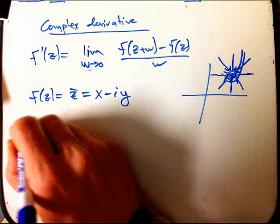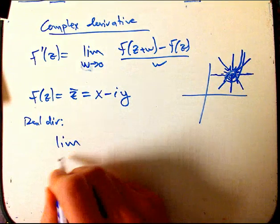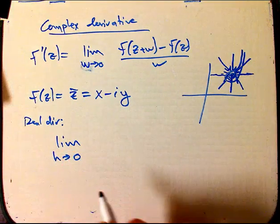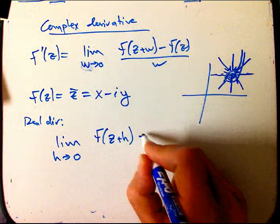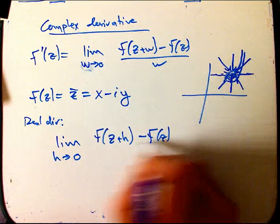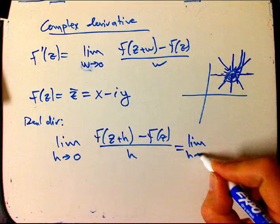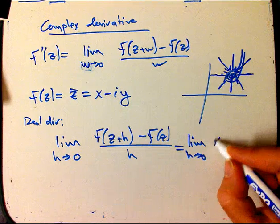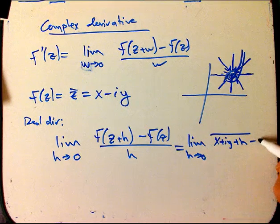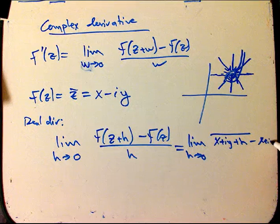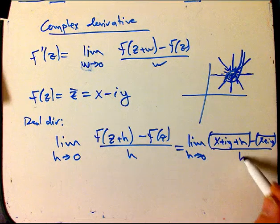Okay, so what we're going to do is we're going to do the real direction. And I'm going to take the limit as h goes to zero. I'm going to reserve h for a real number. Okay, and I'm just going to add h. That looks even more like the usual definition. Okay, so I'm just going to put in the definition of the function.